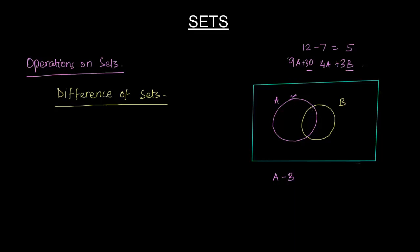Only this part of B belongs to A. If you try to take that away, I'll be left with only this much part of A. We are left with only this much part of A. So this is what is left if you subtract B from A.